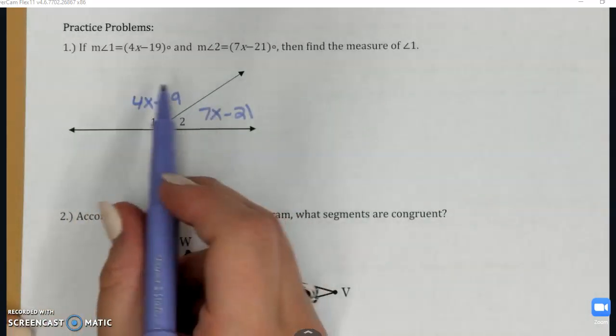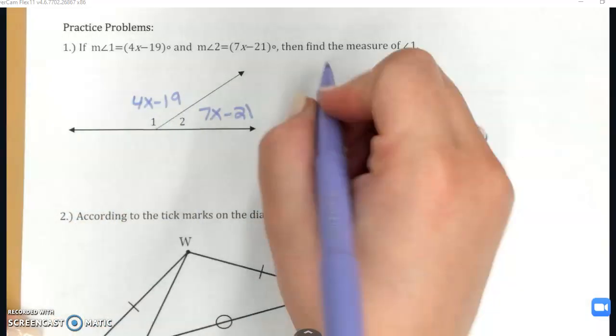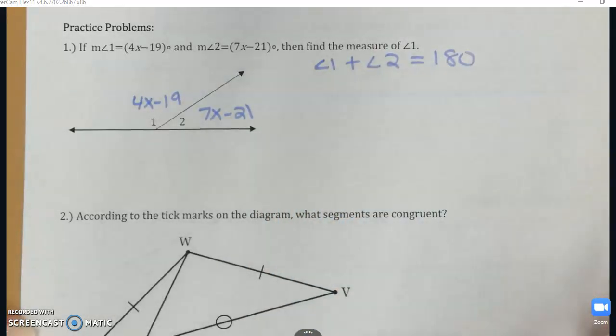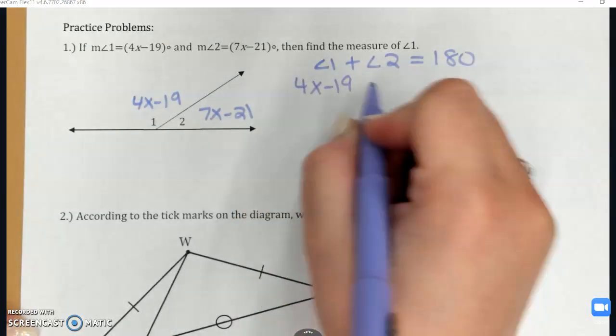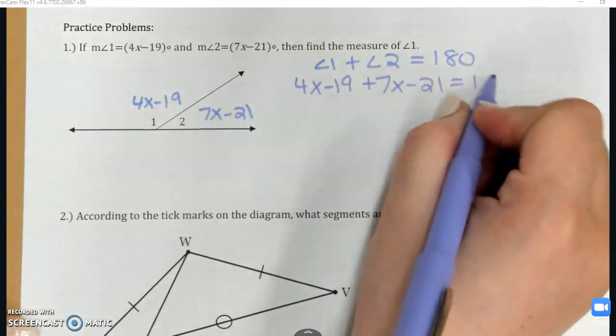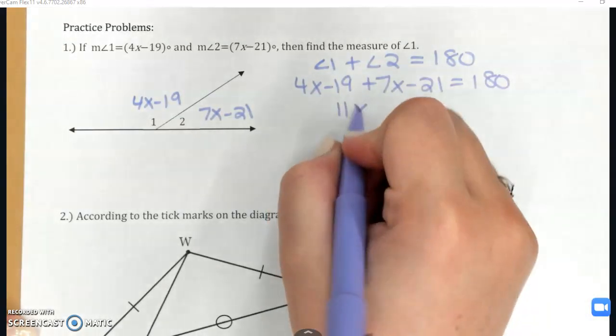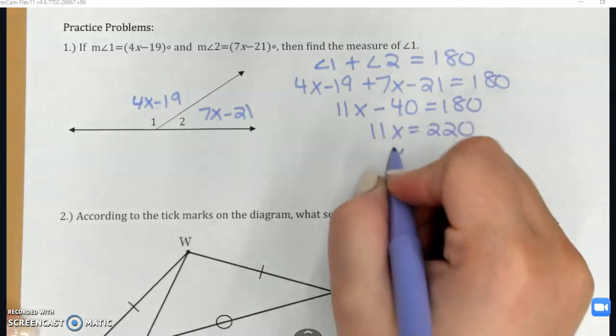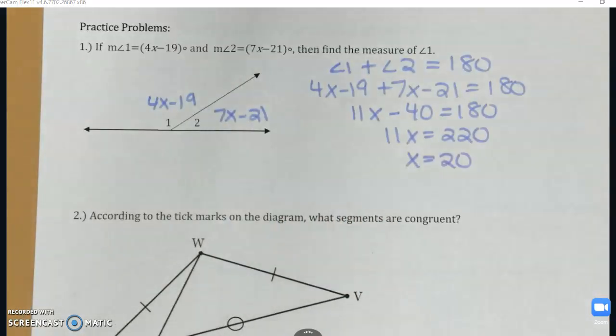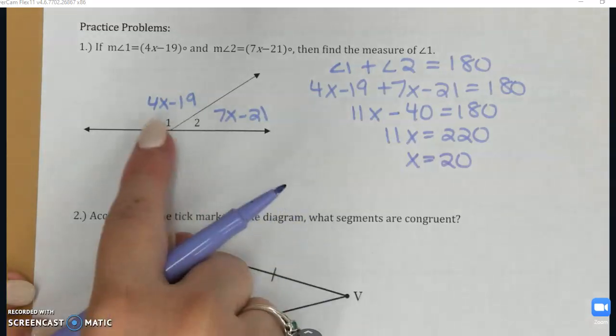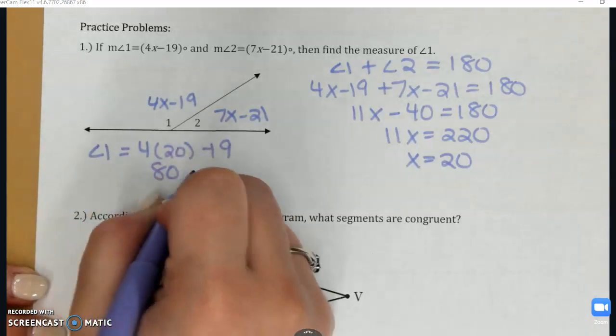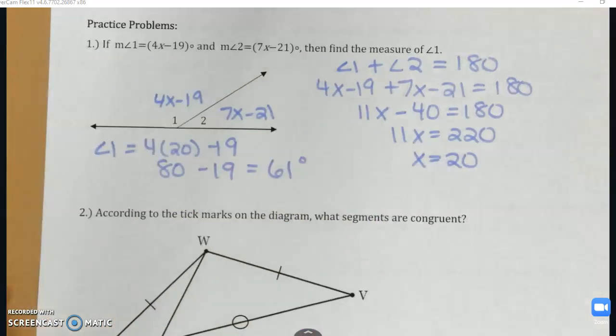Well, I can assume straight angles. And from this diagram, angle one and angle two are forming a straight angle, which means their sums are going to add up to 180. So if I replace those with my X expressions, I can use that to solve for X. Combine my like terms. And I get that X is 20. Now that I know X to find angle one, I'm going to plug it back in for 4X minus 19. And that's going to be 61 degrees. So this is a way you can use an assumption to solve a problem.